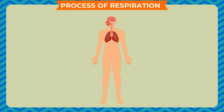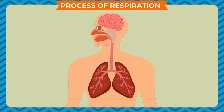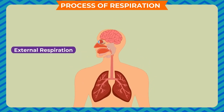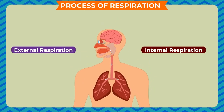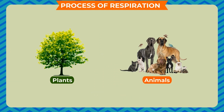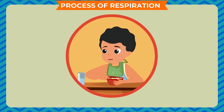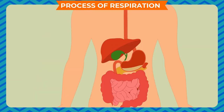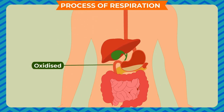Respiration is a complex process involving two steps: external respiration and internal respiration. These two processes are common for all living organisms, whether plants or animals. Whatever food we eat is digested in our body, and this digested food is then oxidized by our body and energy is released.